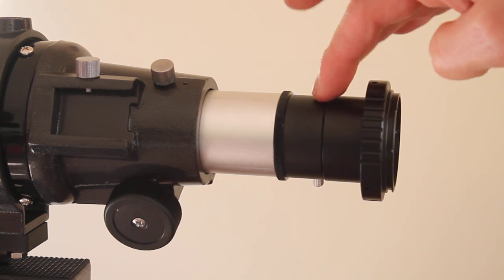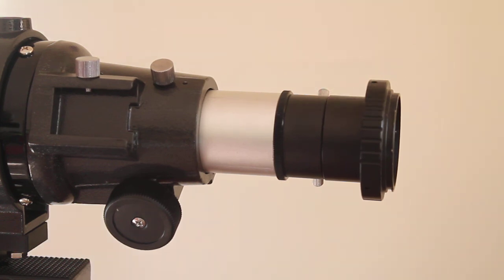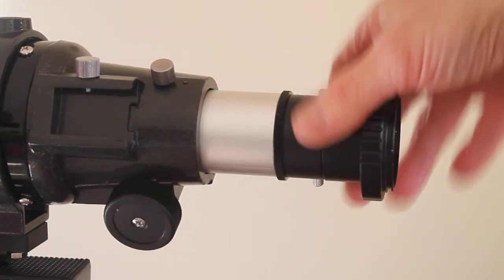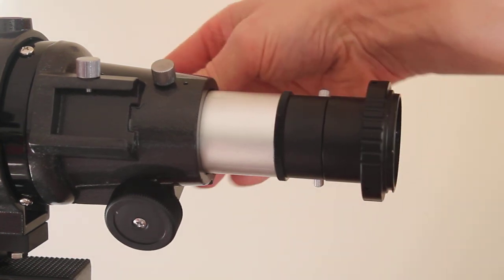Instead of T2 extensions, you can use other methods. You can get 1.25 inch extension tubes which do the same job, or if you have a barrel, lens, or T adapter with a T thread, they do a similar job. But I think T2 extensions are the best and most secure connection you can use.